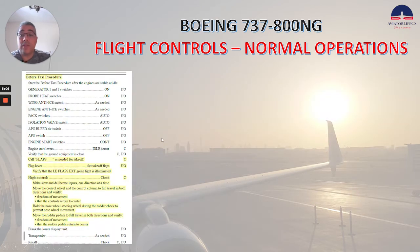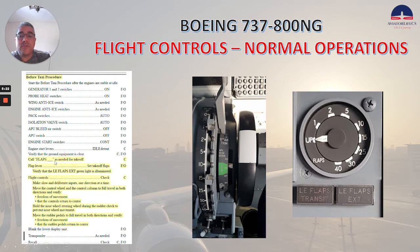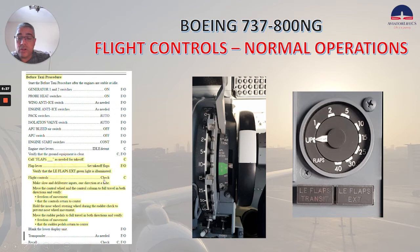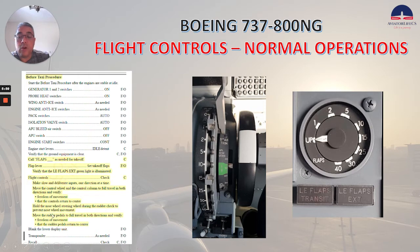In the before taxi procedure, the captain calls for flaps as needed for takeoff. Flap lever — set takeoff flaps. Verify that the leading edge flap extended green light is illuminated, which is this light here. Flight controls — check. Make slow and deliberate inputs one direction at a time. Move the control wheel and control column to full travel in both directions and verify freedom of movement and that the controls return to center. Hold the nose wheel steering wheel during the rudder check to prevent nose wheel movement. Move the rudder pedals to full travel in both directions and verify freedom of movement and that the rudder pedals return to center.